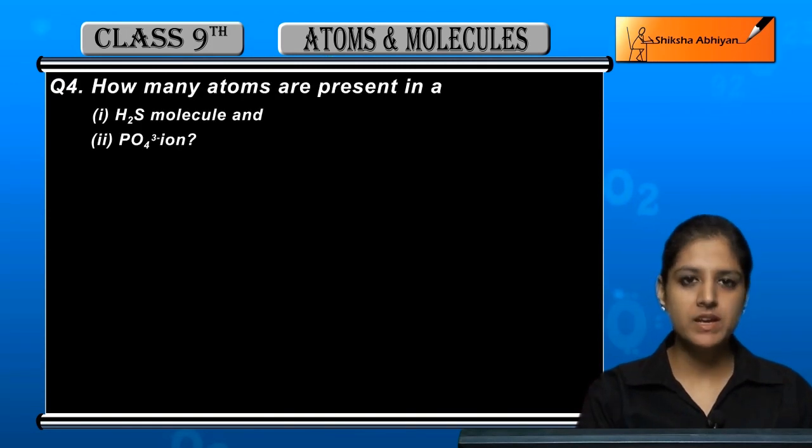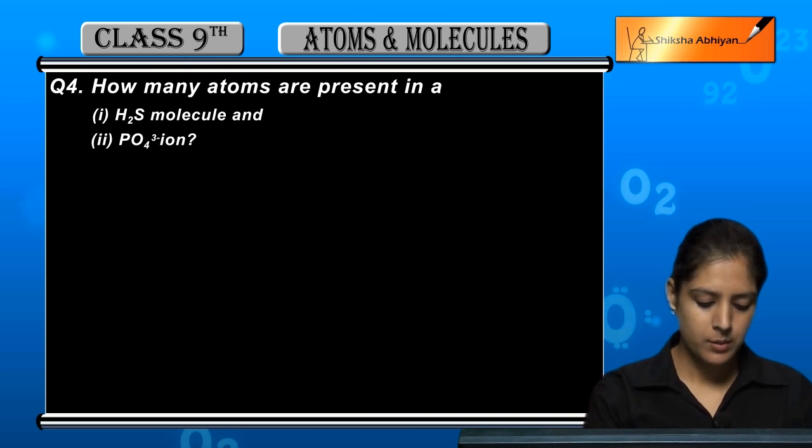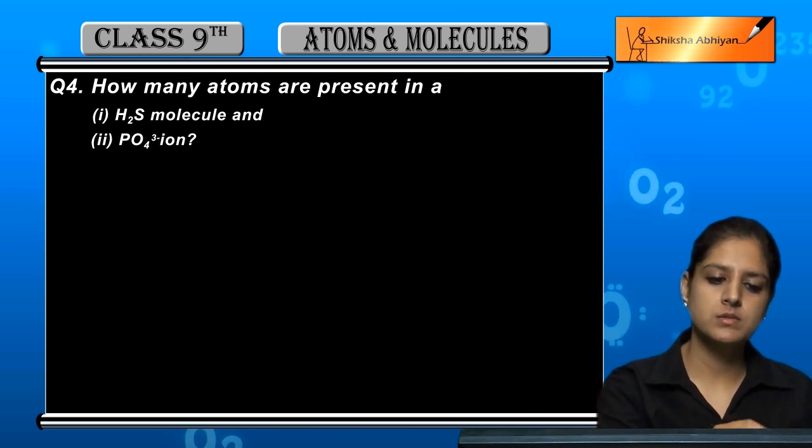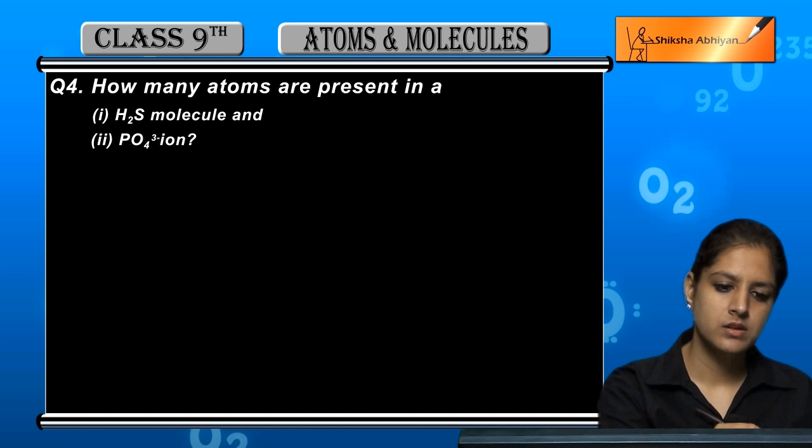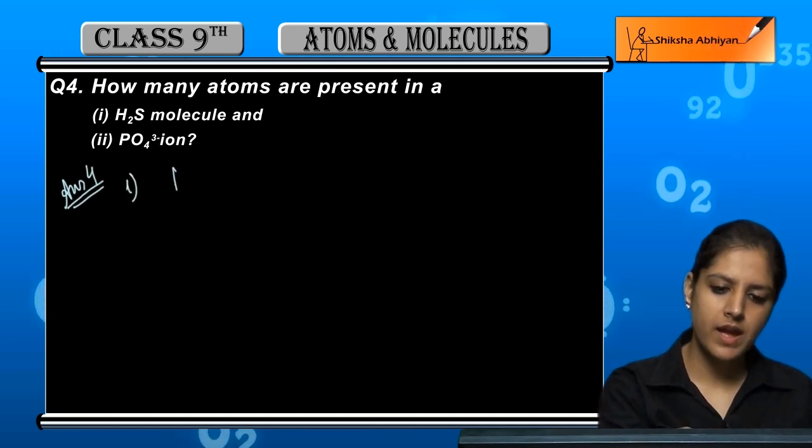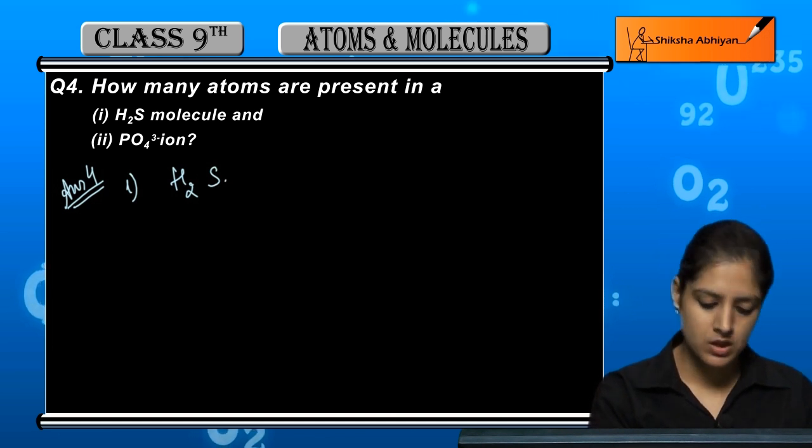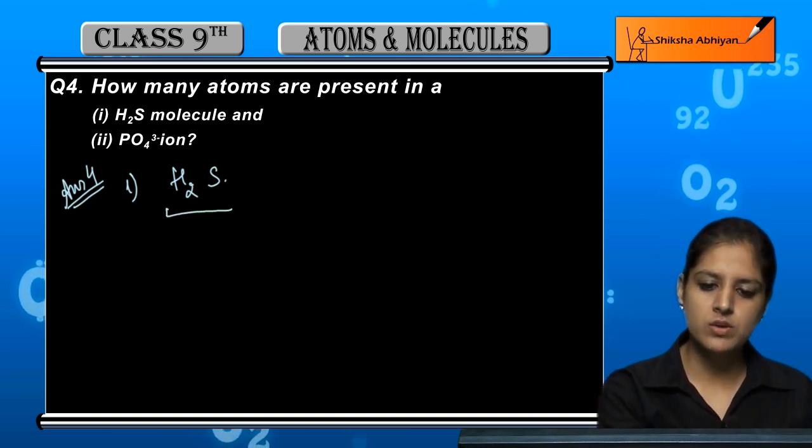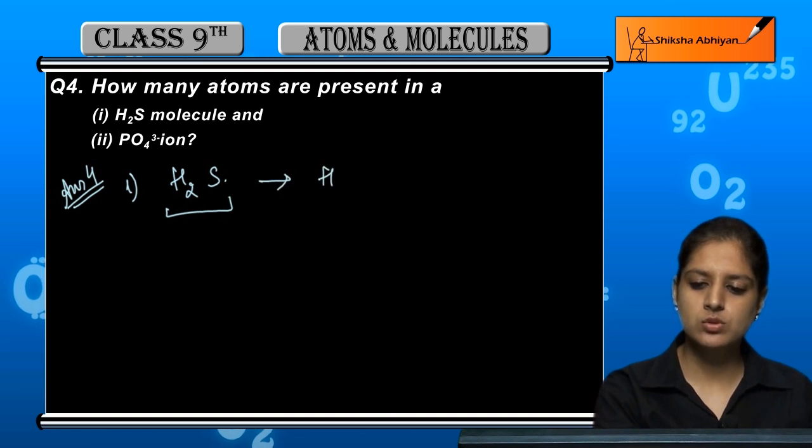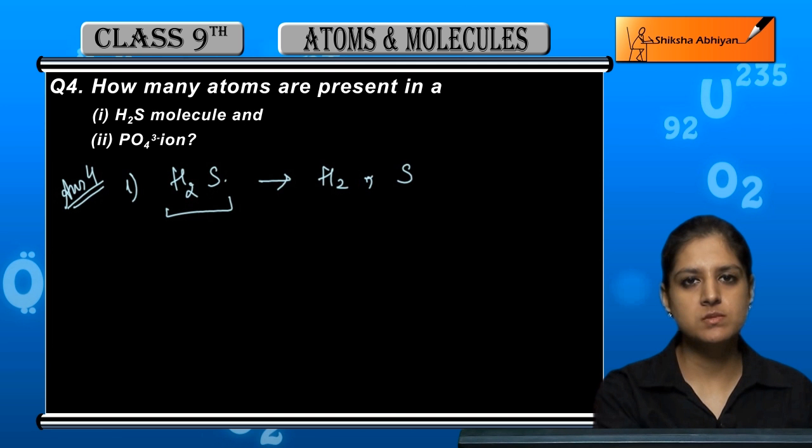How many atoms are present in a H2S molecule and PO4 three minus ion? Let's start with H2S. In H2S, we have hydrogen and sulfur atoms.